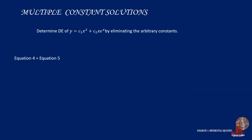We have successfully determined c2 times x times e raised to x from both modified equations, so we can now equate the results. By cross-multiplying the terms, we finally have the differential equation: 2y minus xy' times the quantity 2 minus x squared minus 2x, which is equal to 1 minus x times the quantity of 2y minus x squared y double prime. Thank you.